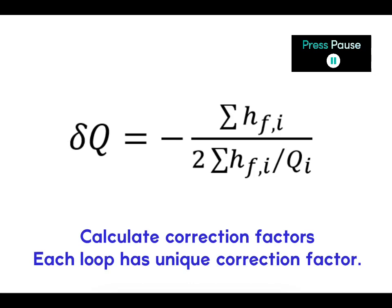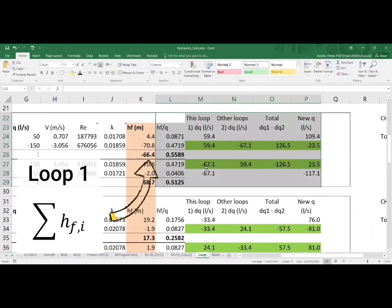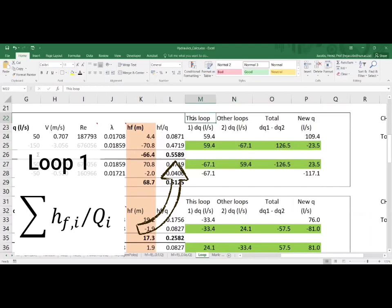The correction factor is now calculated for each loop. So first for loop one and loop two, we get the total HF values and then the sum of HFI divided by QI.